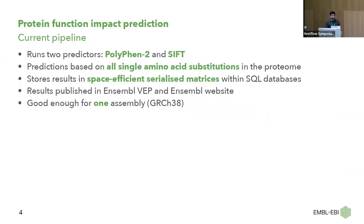Currently we have a pipeline to predict protein function impact. It runs two predictors: PolyPhen-2 and SIFT. These predictions are based on all single amino acid substitutions in the proteome. For each protein, for each position in the protein, we simulate all substitutions of all amino acids and try to see if the protein can tolerate that substitution. These results are all stored in serialized matrices within SQL databases and published in the Ensembl website for all users to use.